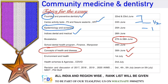Excluding the NEET 2020 paper, most community medicine and dentistry questions historically are memory-based — numbers, dates, years, and scientist names. For example: when was DCI formed, when did the Dental Act come into existence, when did COPRA come into existence, when did WHO start in India. These memory-based, conceptual, numerical, and mathematics-related topics will all be discussed according to the blueprint in our sessions.